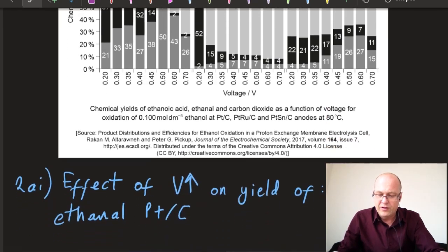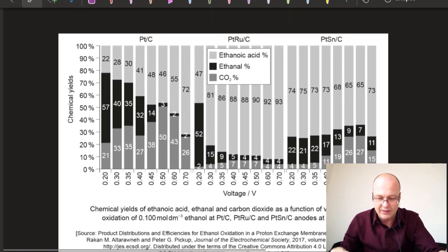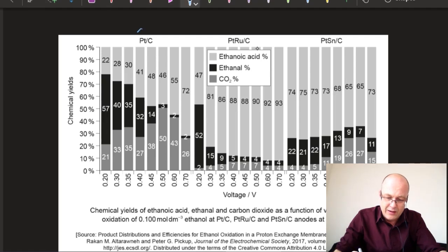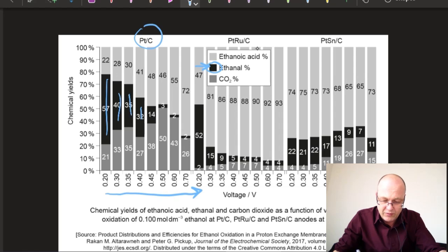First of all, what's the effect of voltage on the yield of ethanol on the platinum carbon catalyst? This is the platinum carbon catalyst. Ethanol is the black color. That's pretty straightforward. As the voltage increases, the amount of ethanol decreases, goes from 57 all the way down to 2.